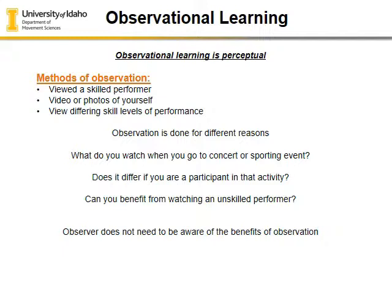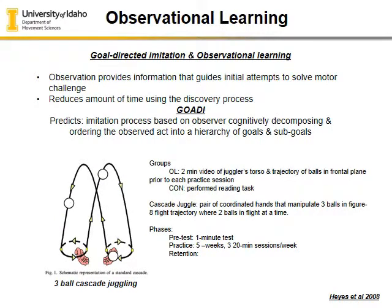You do not need to be aware or conscious of the learning that is going on, or of your ability to improve yourself through observation. One idea is goal-directed imitation, or observational learning — sometimes called DOTI. Observation provides information that guides your initial attempts to solve a motor challenge. For example, is it beneficial for young children learning to ride a bike without training wheels to watch somebody else do it first? This reduces the amount of time for them to discover the solution, as they are unconsciously processing how to do it.